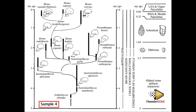Which one existed for the longest period? Paranthropus boisei existed the longest. What is the common ancestor of Homo erectus and Paranthropus boisei? Go back along the branches — there are unknown ancestors marked with question marks — until you reach Australopithecus afarensis, which is the common ancestor.